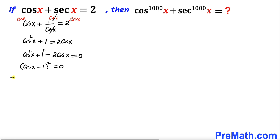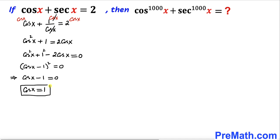That means we can write cosine of x minus 1 equals 0 as well. Moving the negative 1 to the right hand side, we get cosine of x equals positive 1.